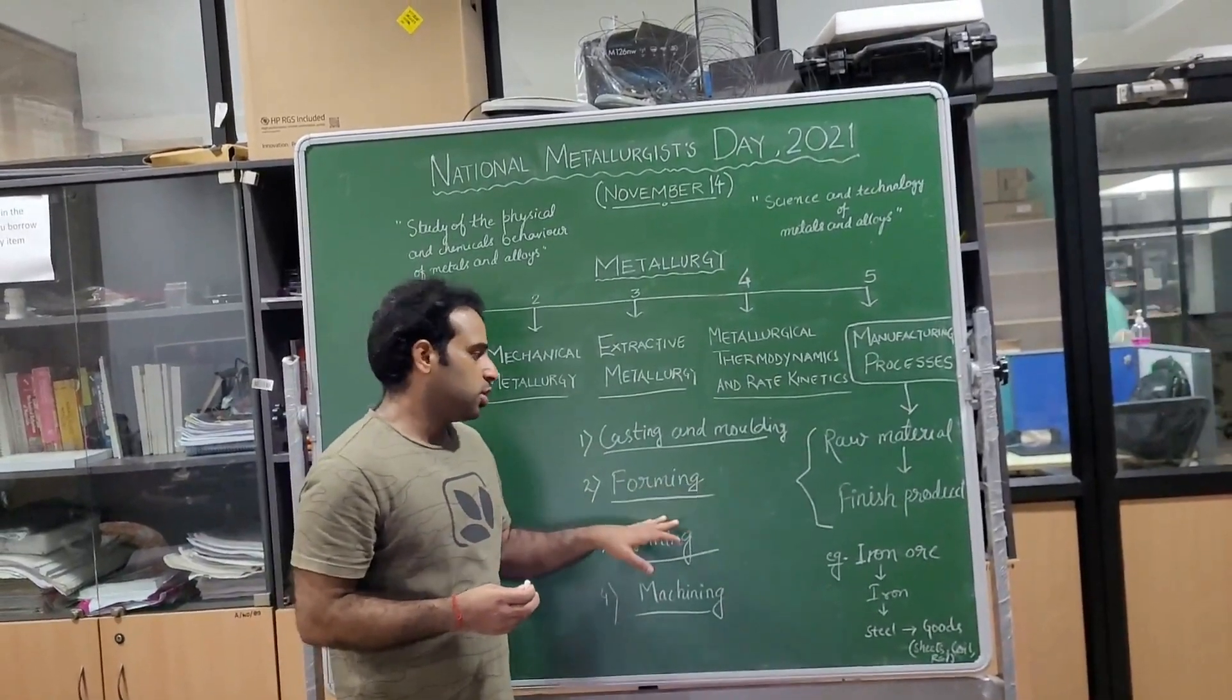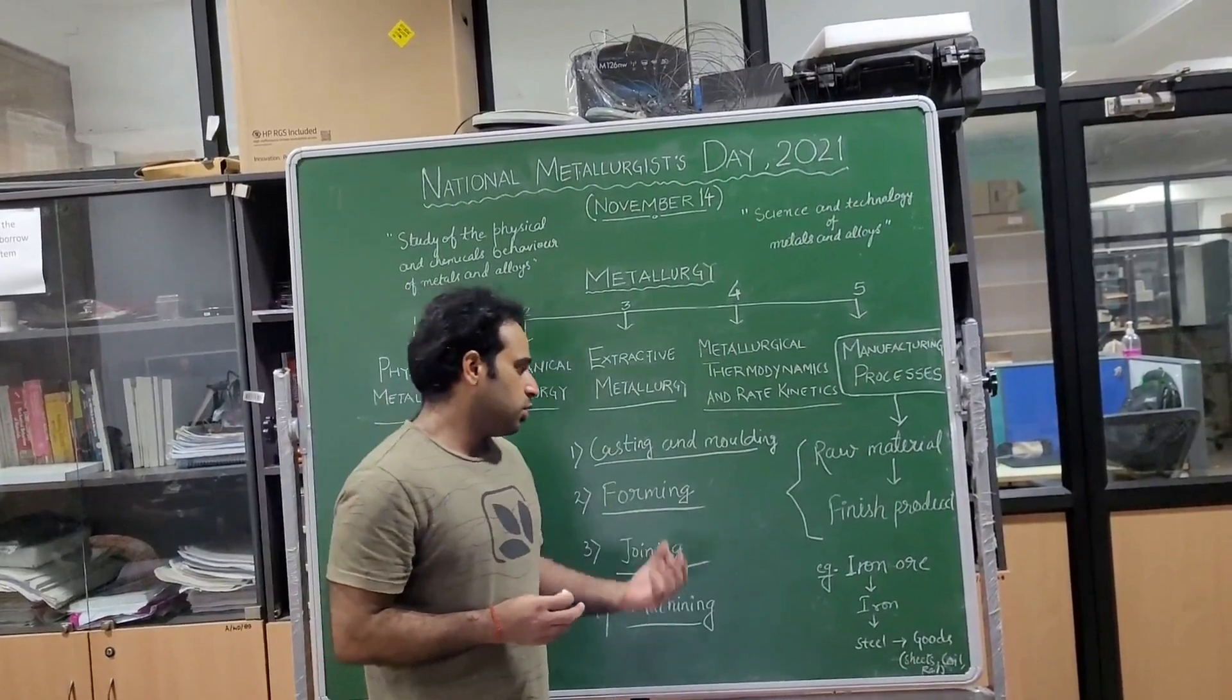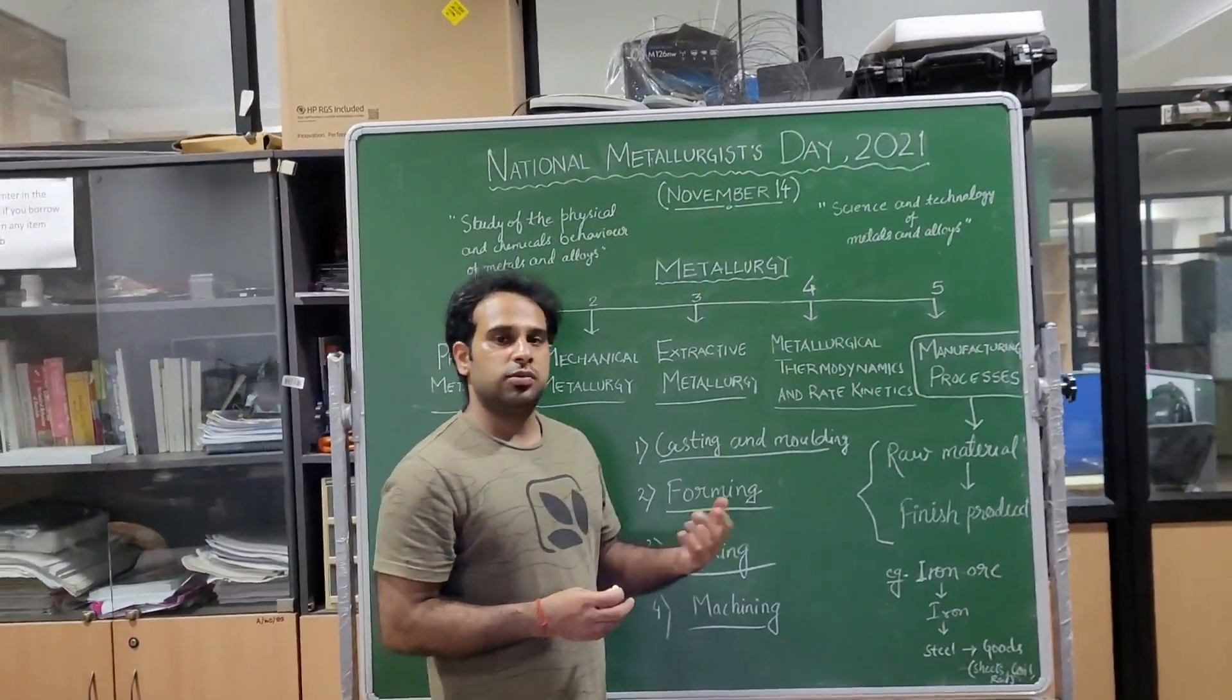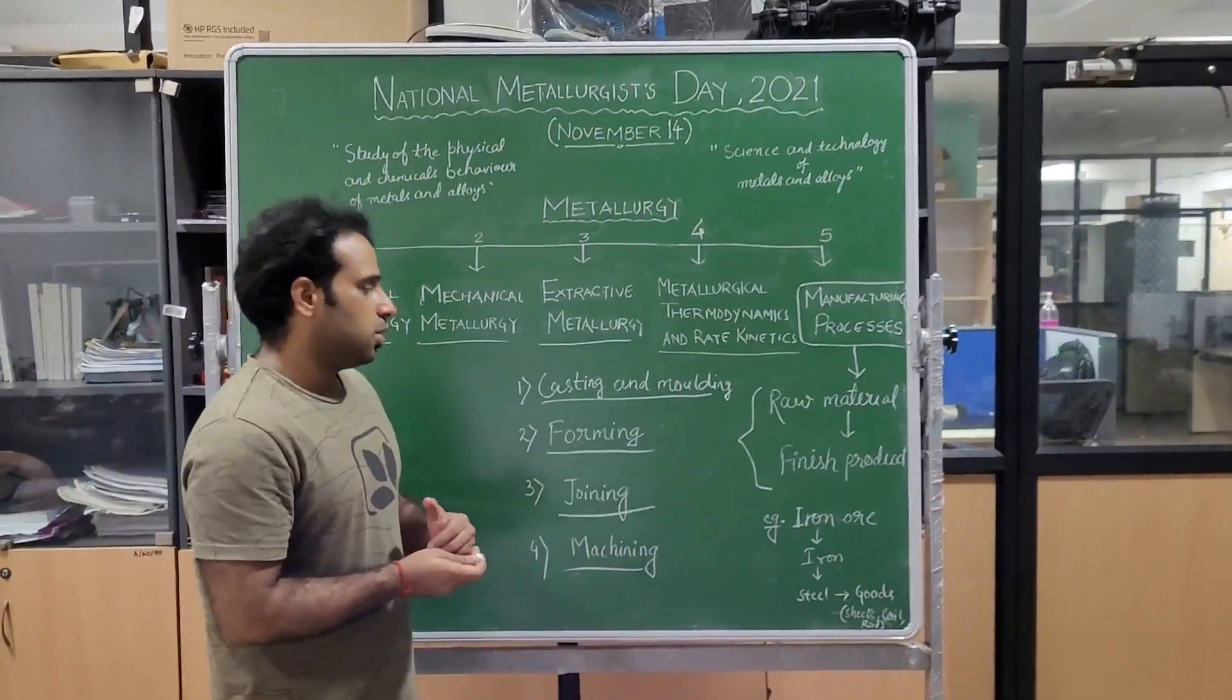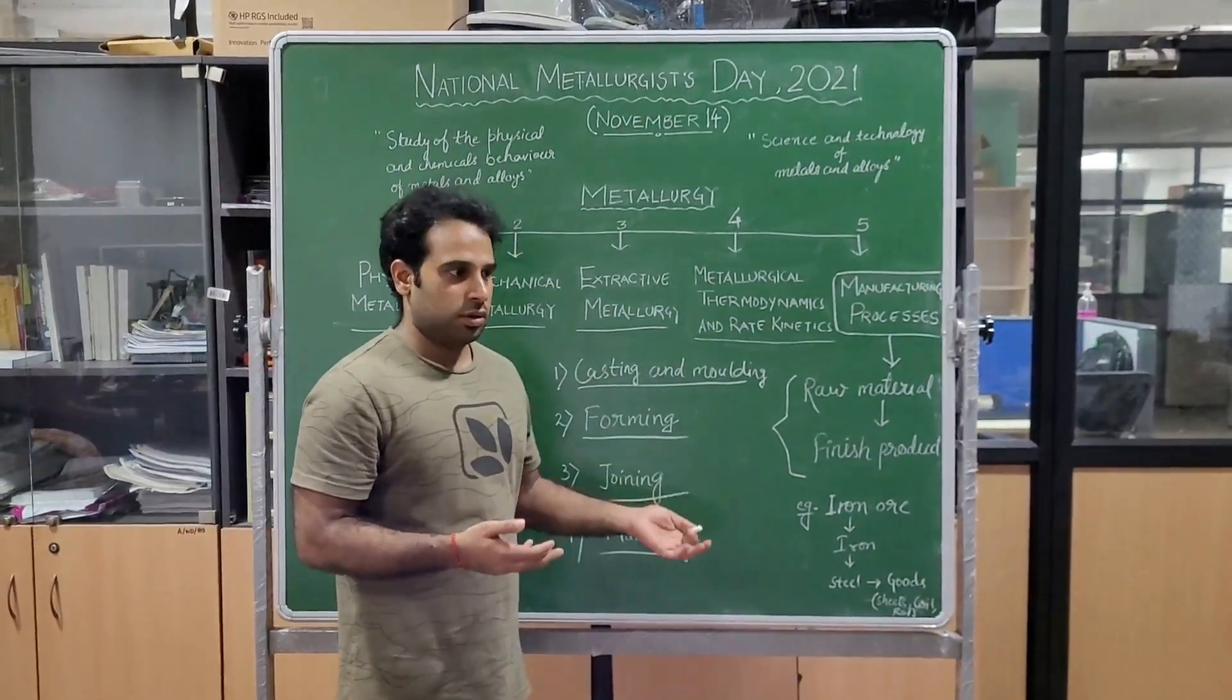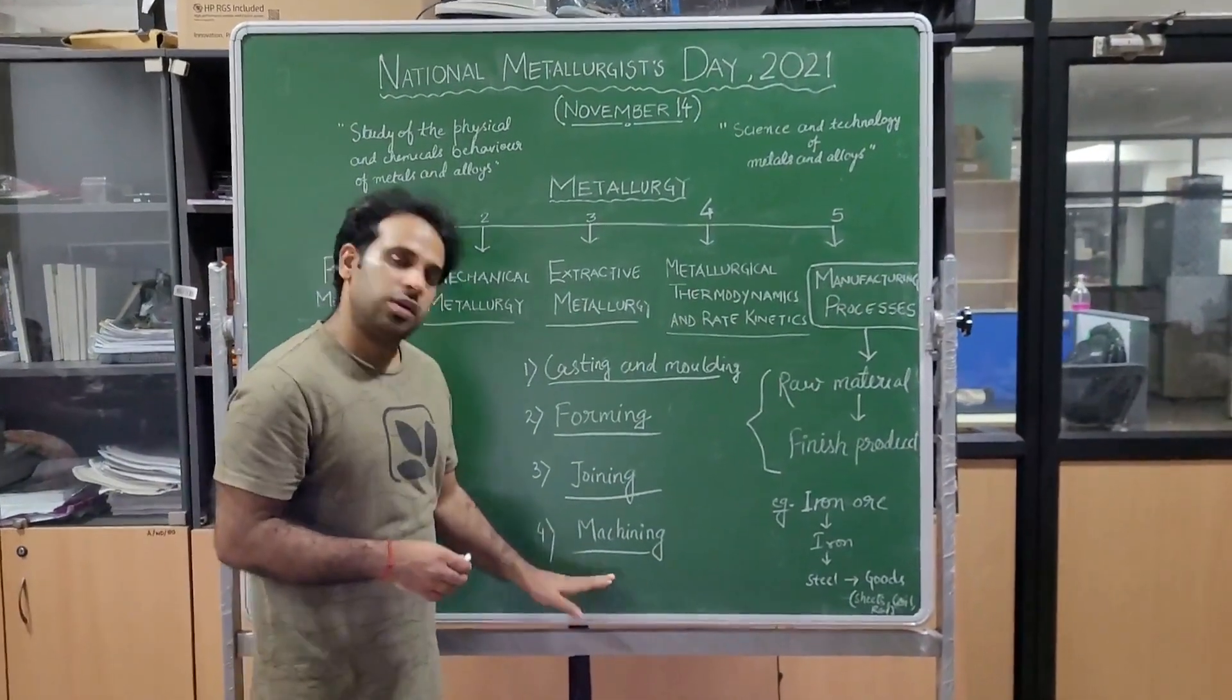Under the forming manufacturing process, we are basically giving shape and form to our finished product or sheet. In the joining process, different kinds of joining processes exist in the engineering world, for example soldering, welding, or brazing processes.